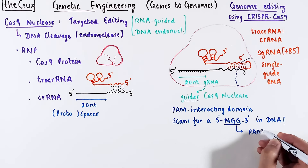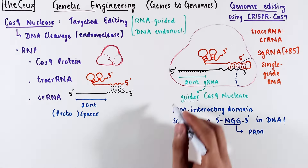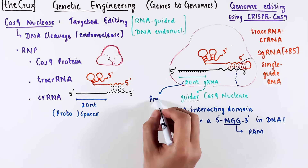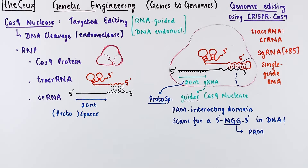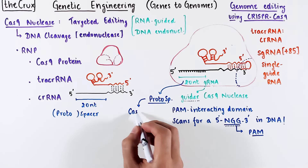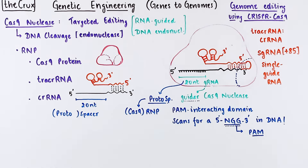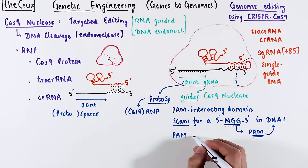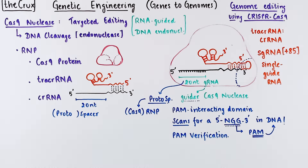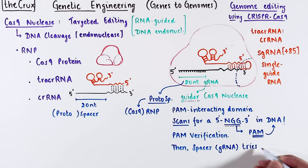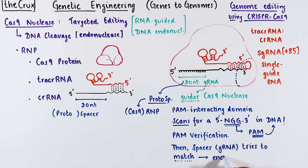The NGG sequence is a PAM, short for protospacer adjacent motif. Recall that the 20-nucleotide region is called the protospacer, so the motif adjacent to it is the protospacer adjacent motif. An important point: the protospacer RNA is part of the Cas9 RNP, whereas the PAM sequence is only found in the target DNA. The PAM scanning step — called PAM verification — leads to the spacer or guide RNA sequence pairing with the target DNA, and when it base pairs, the nuclease domain of Cas9 cuts that paired DNA.